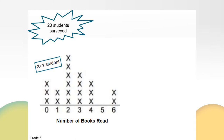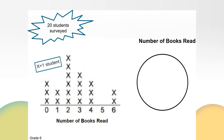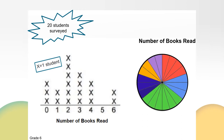Now I need to see what fraction of the circle graph each category represents. 3 out of 20 students read 0 books, so I can shade in 3 out of 20 pieces to represent 3/20ths of the circle, represented by light blue. I can also see that 3 out of 20 students read 4 books, so I can shade in 3 out of 20 pieces to represent 3/20ths of the circle, shown with darker blue. From the line plot, I can see that only 2 out of 20 students read 1 book. I can shade in 2 out of 20 pieces of the circle graph to represent the 2 students that read 1 book.